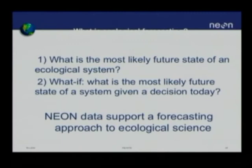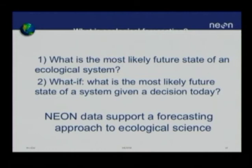We came up with two definitions from the literature. First: what is the most likely future state of an ecological system? That's the equivalent of the weather forecast. Given the state of the system today, what is the most likely state of the system a year from now, nine months from now, or ten years from now?